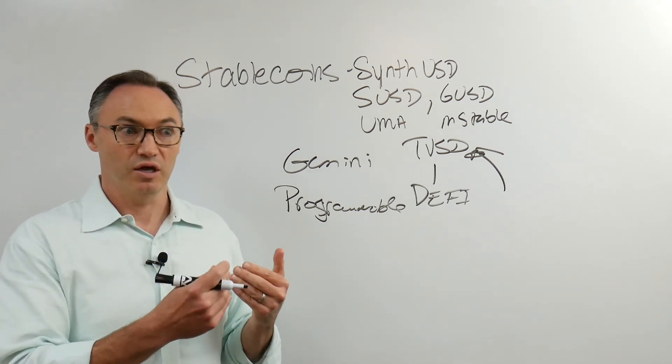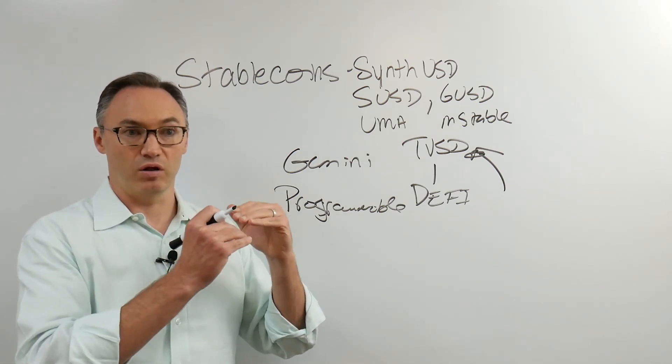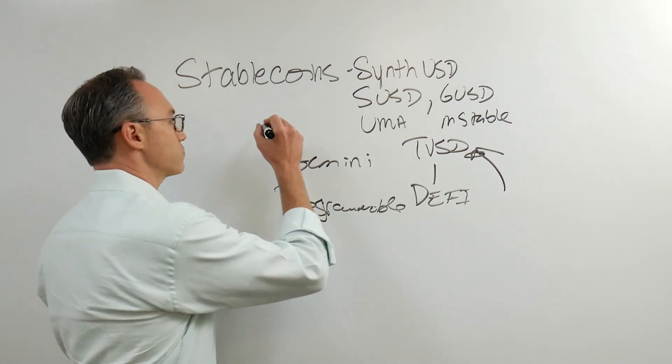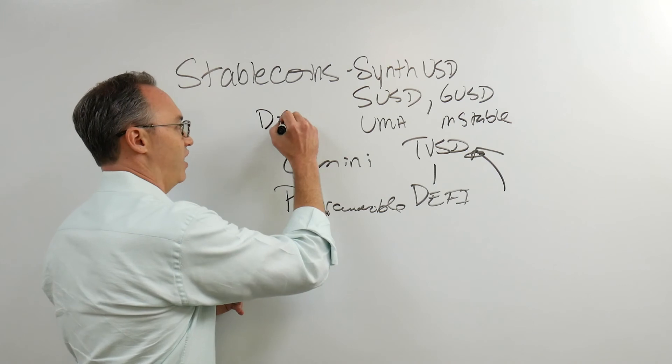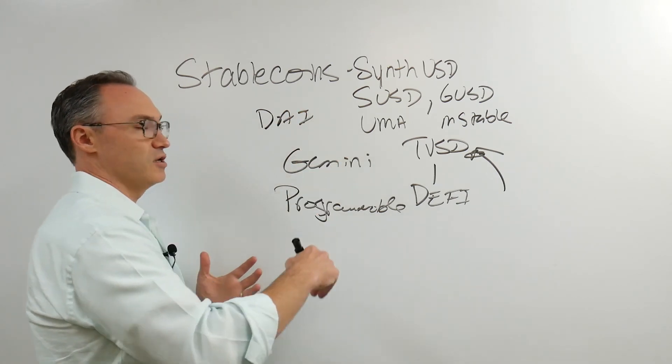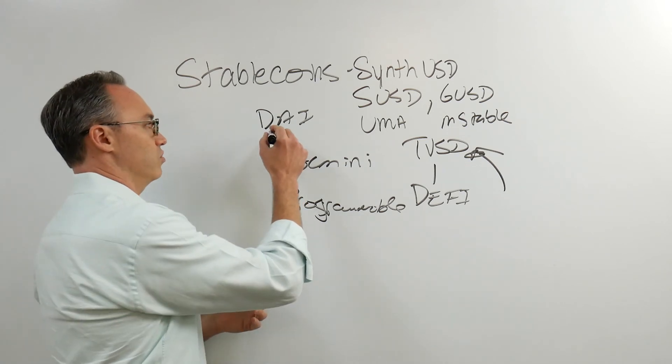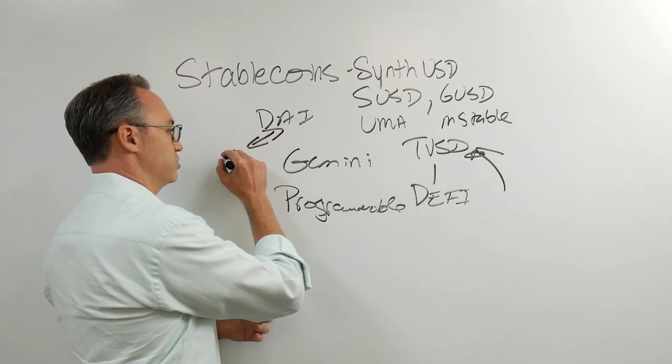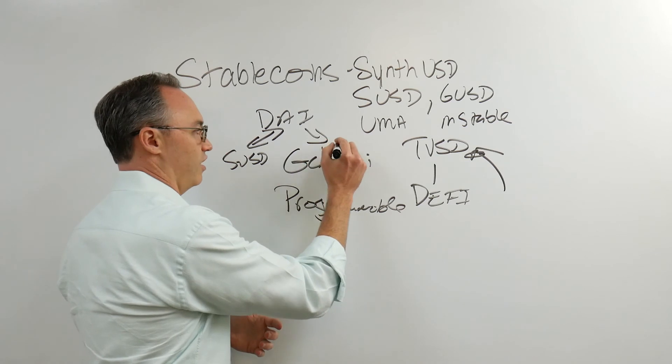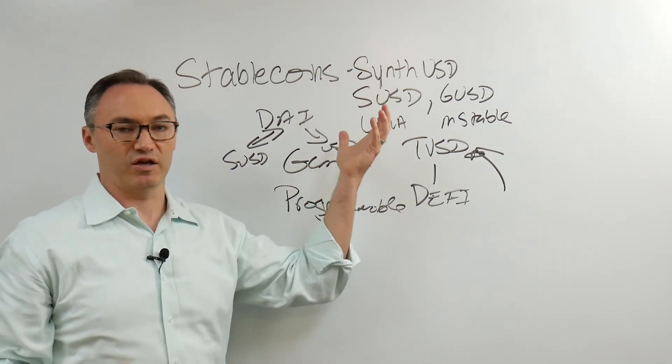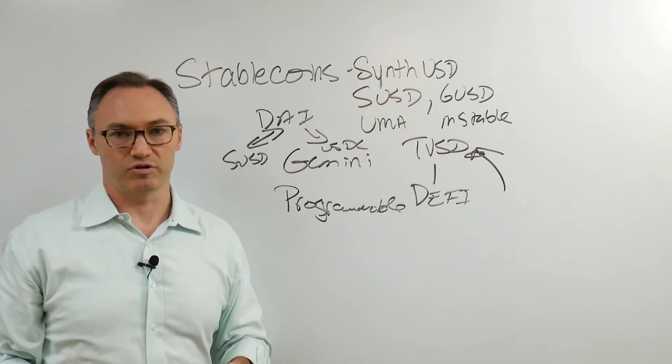There are yield farming opportunities to capitalize on that arbitrage. And that arbitrage is really what helps keep them all worth roughly a dollar. Because if all of a sudden the value of DAI went up to $1.20, someone would arbitrage that opportunity and make the exchange between DAI and SUSD, or between DAI and USDC. Eventually the value would get back from $1.20 down to $1.